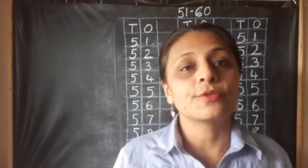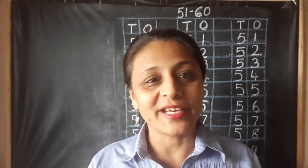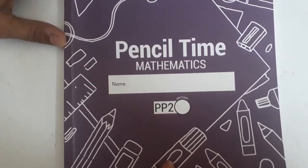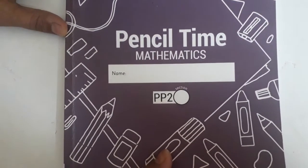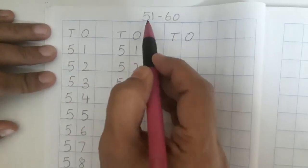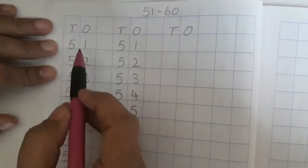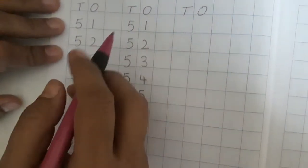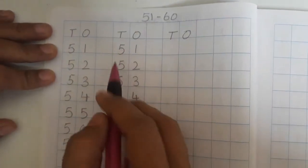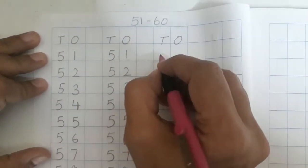This way we are going to write numbers 51 to 60 in our notebook also. So, are we ready with the notebook? Children, let's open pencil time mathematics. Now, first of all you are going to write heading. Heading will be 51-60. And you are going to write today's date. Now, you have to write 51 to 60 three times. Okay. So I have written once and twice. I am going to write one more time to show you how to write.